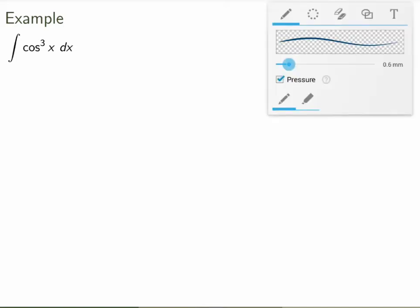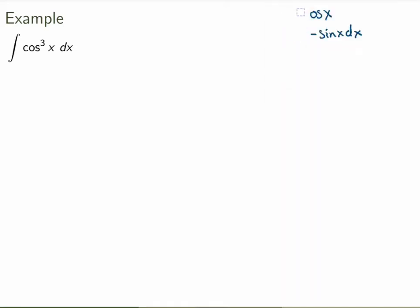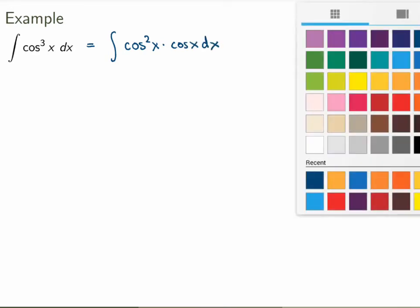All right, so let's remove that and start again. How can we evaluate this integral? Well, one thing you could do first is just rewrite the cosine cube as cosine squared times cosine of x dx. All right, that's pretty trivial. But why would I do that?